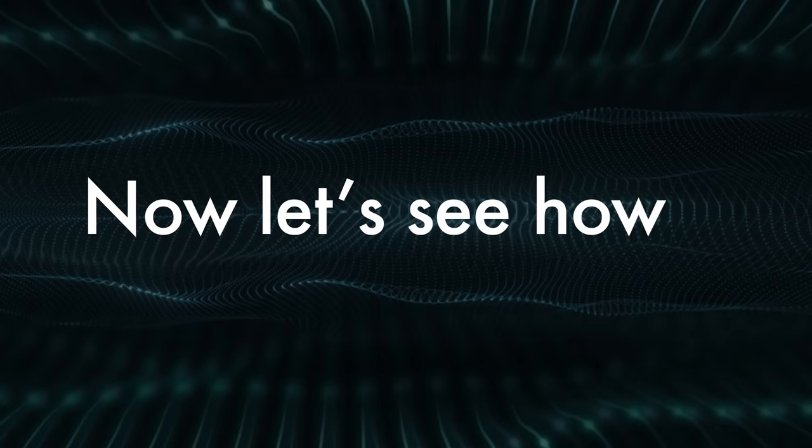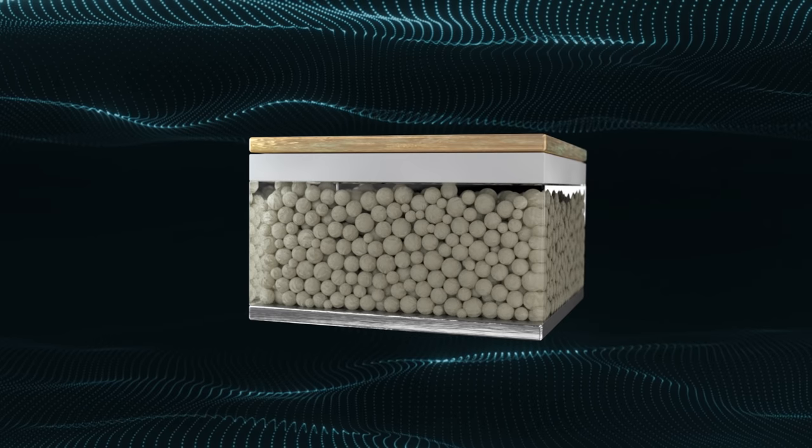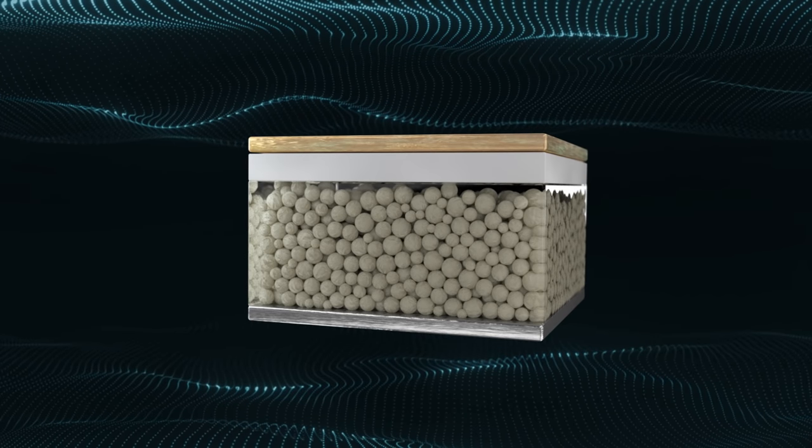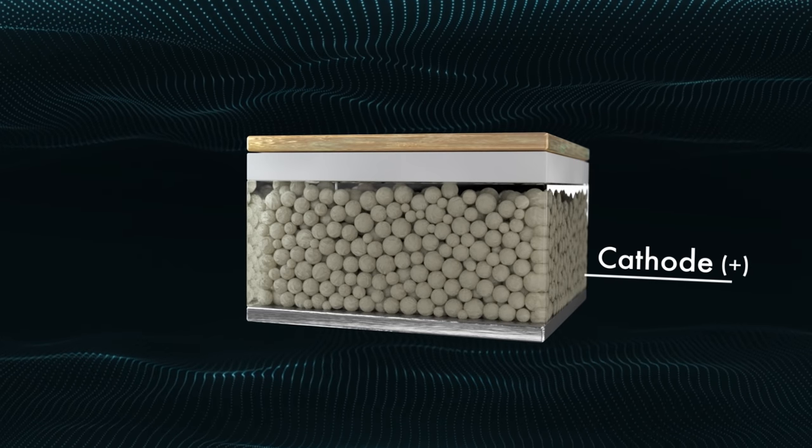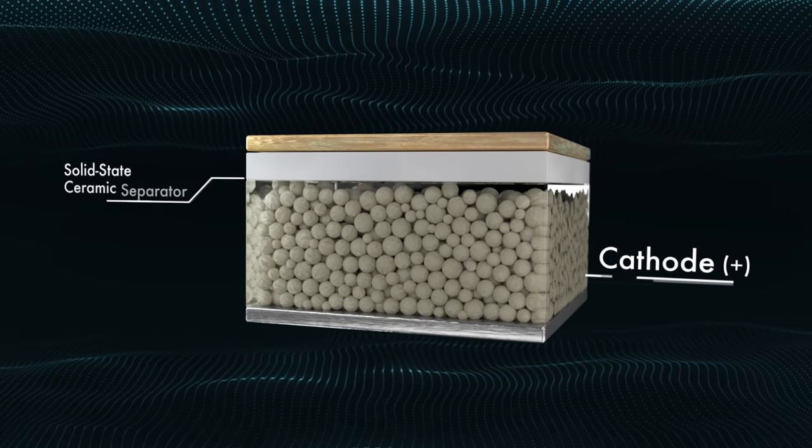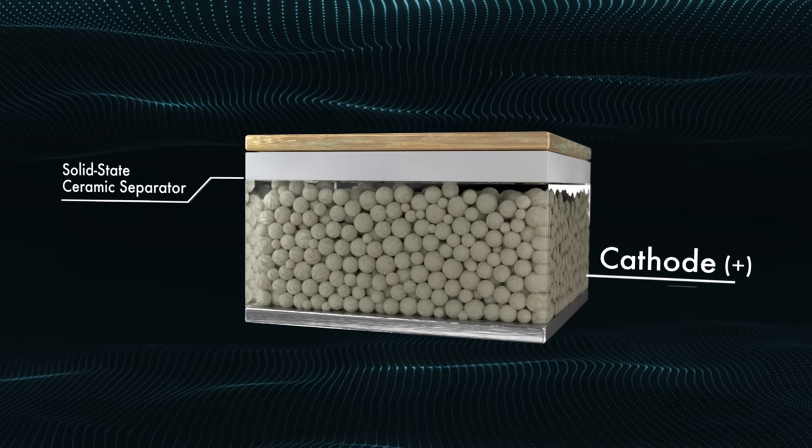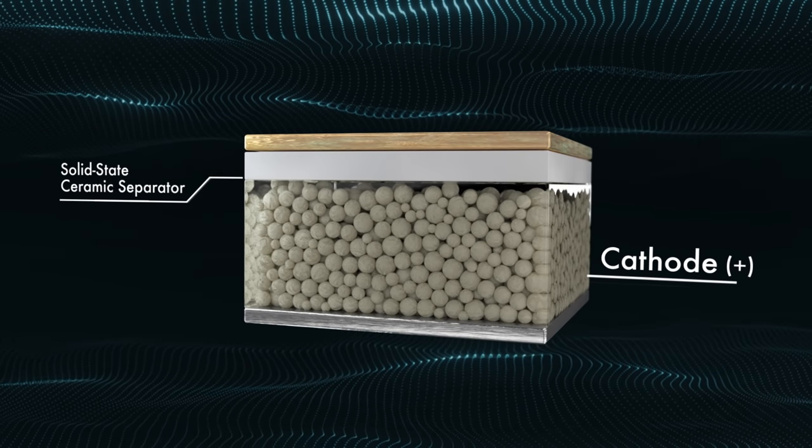Now let's see how solid-state lithium metal works. In a QuantumScape solid-state lithium metal battery, there are only two main layers: a cathode or positive electrode with an electrical contact, and a solid-state ceramic separator, which replaces the porous polymer separator found in conventional lithium ion batteries.